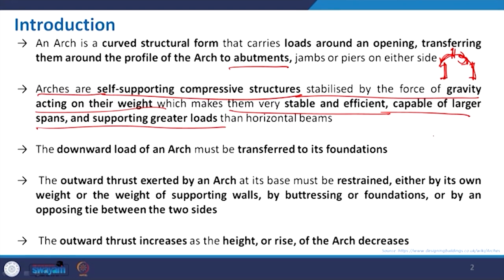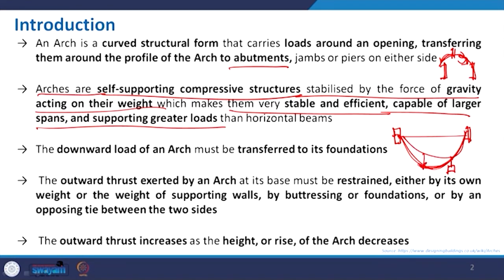We can understand the arch form with the example of a chain. If we have a chain with a length that allows sag, it gives a particular form — the catenary or parabolic form. It has the flexibility that when you add some weight to it, it will change form a little; you can balance it, and if you reverse this, that will create the arch. Normally with a chain or cable, converting to the arch form.